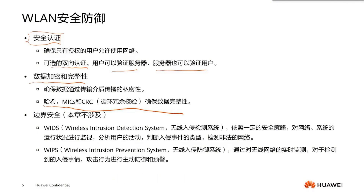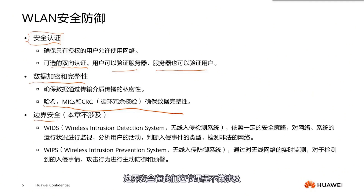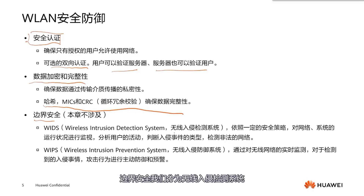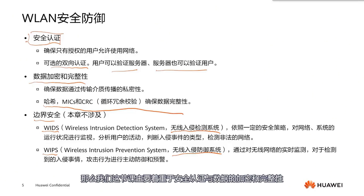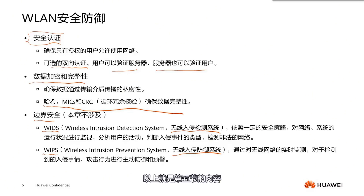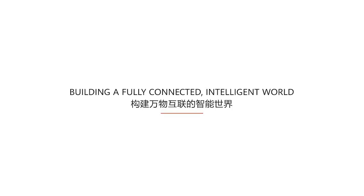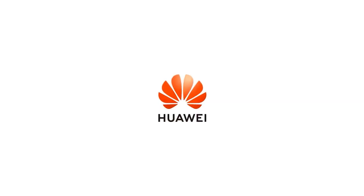The third measure is perimeter security. In this lesson, we won't cover perimeter security in detail — just an overview. Perimeter security includes wireless intrusion detection systems (WIDS) and wireless intrusion prevention systems (WIPS), commonly referred to as WIDS and WIPS. In this session, we will focus mainly on secure authentication and data encryption and integrity. That concludes this lesson on WLAN security.